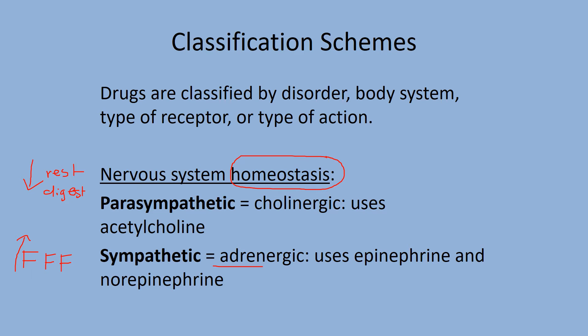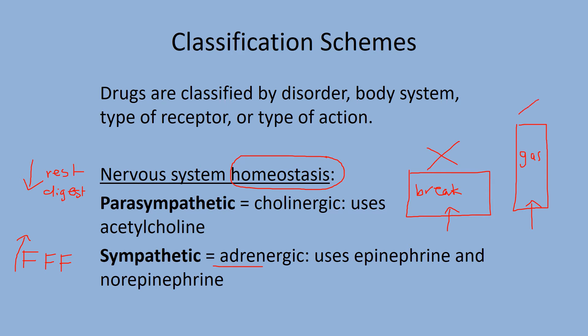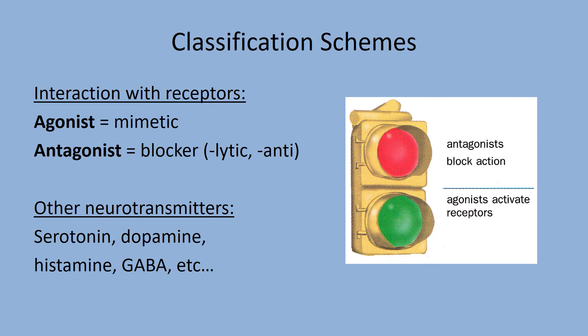Drugs that stimulate the sympathetic nervous system are adrenergic, and if they block it, they're anti-adrenergic. A useful analogy: the parasympathetic nervous system is like the brake pedal, and the sympathetic nervous system is like the gas pedal. If you activate the parasympathetic, you slow down; if you activate the sympathetic, you speed up. If you block the sympathetic, you slow down; block the parasympathetic, you speed up. Agonists mimic the action of the chemical that activates the receptor — they're mimics. Antagonists block, and they'll normally be called blockers, like beta blockers. They may have a lytic or anti- prefix — meaning they're against activating the receptor.